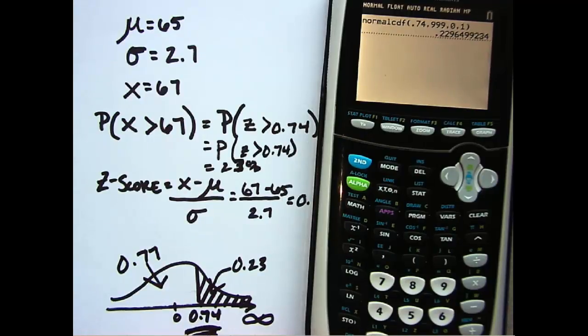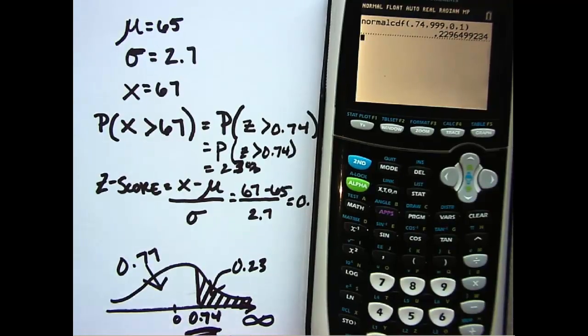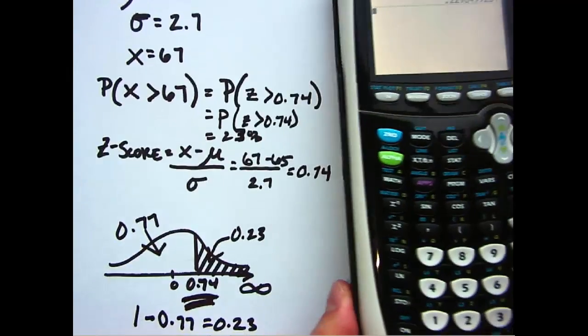one minus what I already knew, that 0.77, and that would have given me the remainder, or the 0.23 as well.